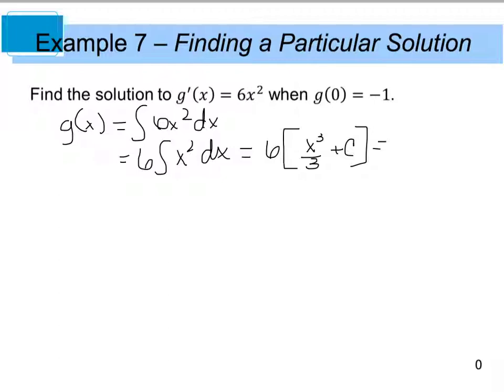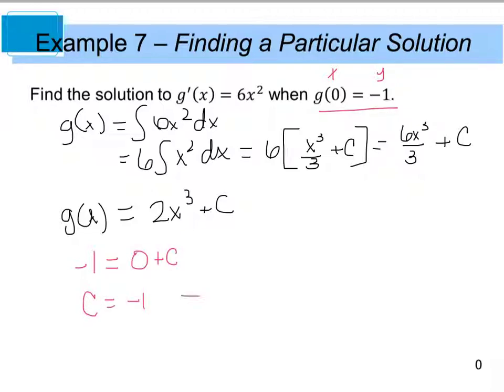So if I distribute that 6, I end up with 6x cubed divided by 3. And remember, if you put the 6 with the c, it's kind of an arbitrary number, so you don't have to worry about that. We end up with plus c. 6x cubed divided by 3 is really equal to 2x cubed plus c. So this is our arbitrary equation for g of x. Now if I want to use my initial condition that was given, I'm going to plug in 0 for x and negative 1 for y. So I end up with negative 1 equals 0 plus c, or c equals negative 1, which then tells me that g of x is really equal to 2x cubed minus 1. And that is my final solution.